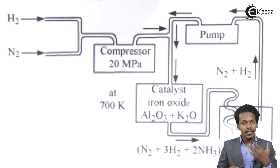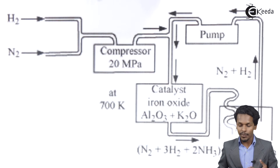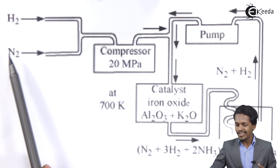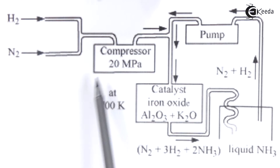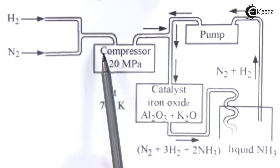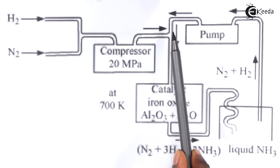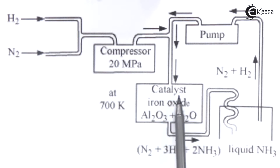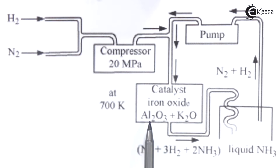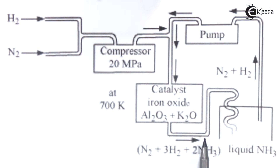This is a schematic diagram of Haber's process. There is an inlet of H2 and an inlet of N2. At high pressure — around 200 MPa — N2 and H2 pass through this tube. They then pass through the catalyst, which is iron along with Al2O3 and K2O used as promoters. N2 along with 3 moles of H2 react to produce NH3, resulting in a mixture of NH3, H2, and N2. This mixture passes through a pipe and condenses to form liquid NH3.